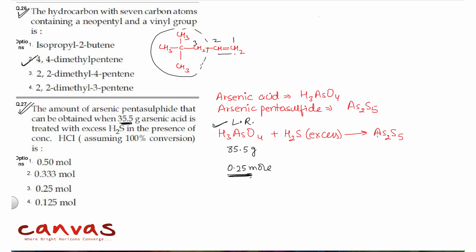0.25 mole of arsenic will form half mole of As2S5, since we require two arsenic for one mole As2S5. With 0.25 mole of arsenic, we can form maximum 0.125 mole. The answer is the fourth option.